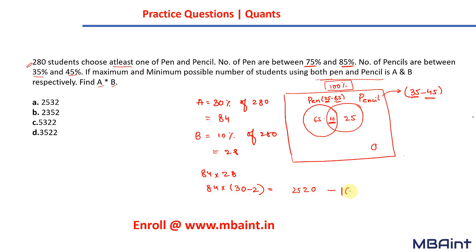Calculating 84 × 28: this equals 2352, which is option B. Hope you have understood it. Thank you.